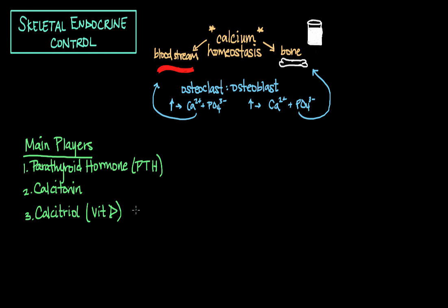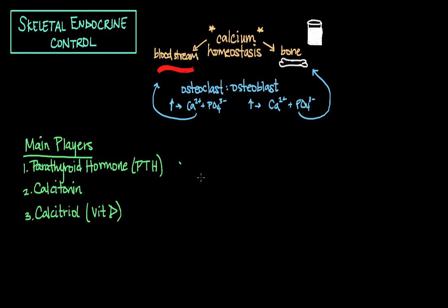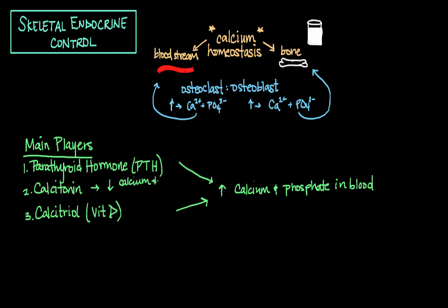These hormones help regulate the amount of calcium that is either absorbed from the gut or reabsorbed from the kidneys, and they also affect the ratio of osteoclast to osteoblast activity. Parathyroid hormone and calcitriol have the same overall effect of increasing calcium and phosphate in the blood, with calcitonin having the opposite effect — it decreases the amount of calcium and phosphate in the blood. A helpful way to remember this is that calcitonin actually tones down the calcium in blood.